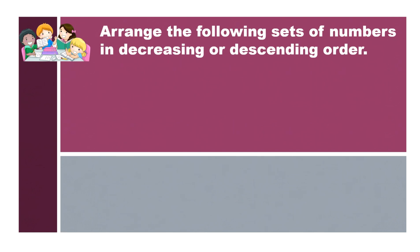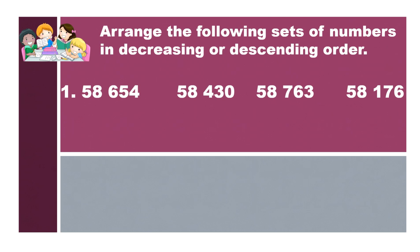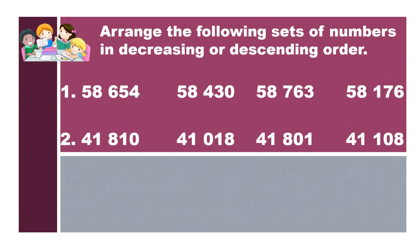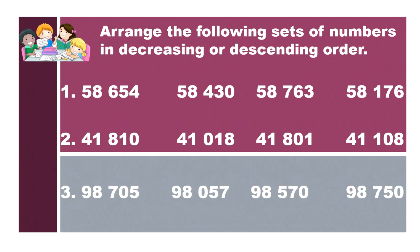Now you will arrange the following sets of numbers in decreasing or descending order. When you say decreasing or descending order, you are arranging numbers from greatest to least. Number 1: 58,634, 58,430, 58,763, and 58,176. Number 2: 41,810, 41,018, 41,801, and 41,108. Number 3: 98,705, 98,057, 98,570, and 98,750.